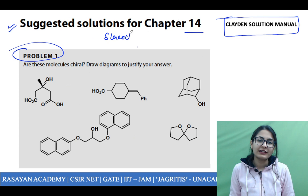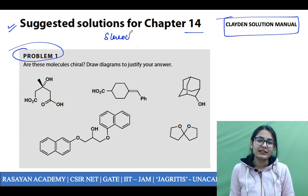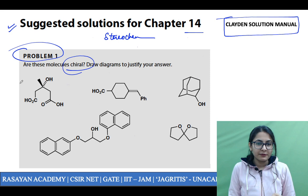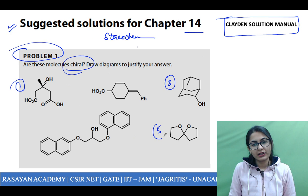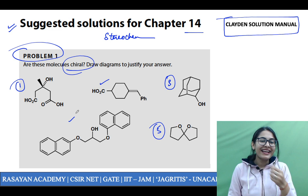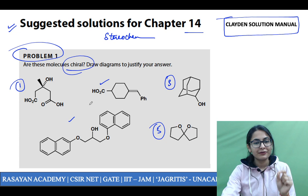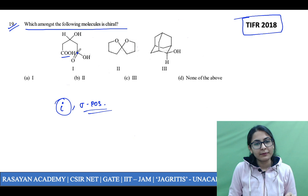Are these molecules chiral? The first one, third one, and fifth one from the Clayden solution manual are the exact ones that appeared in the exam. You can study the other two for upcoming exams. Direct questions — not even a change of conformation, exact questions. One is written as C(OH) and the other is opened up as COOH, but it's actually the same thing.